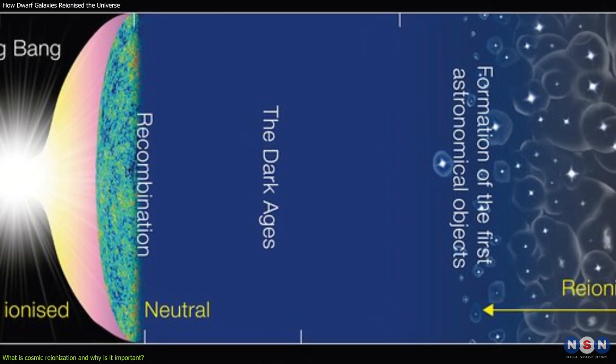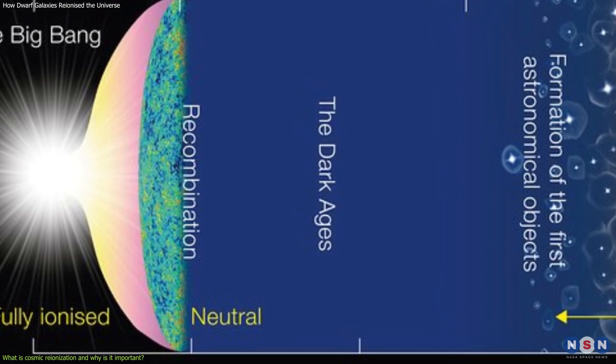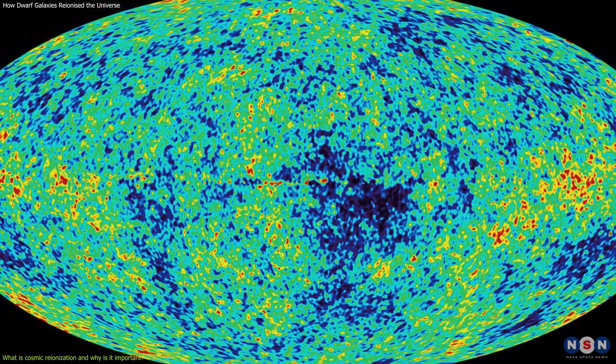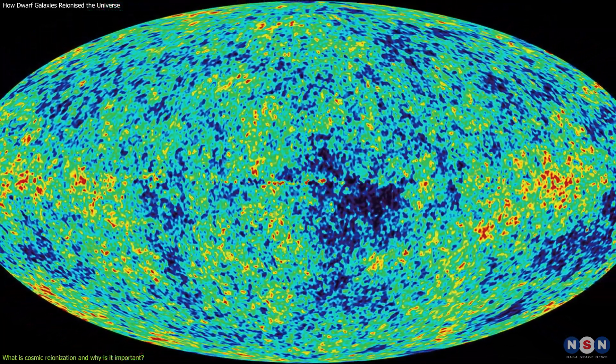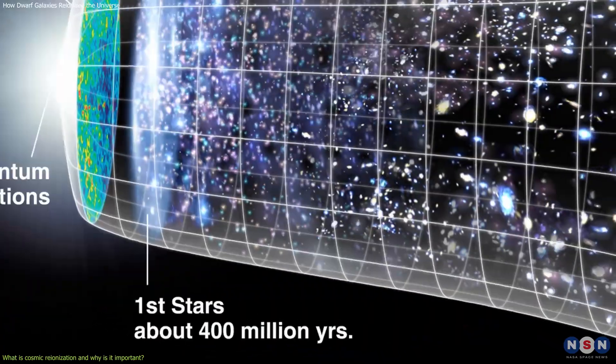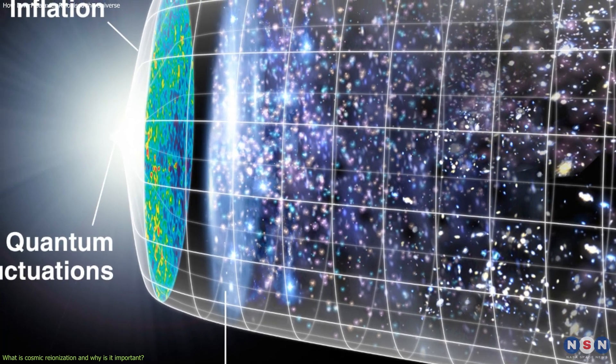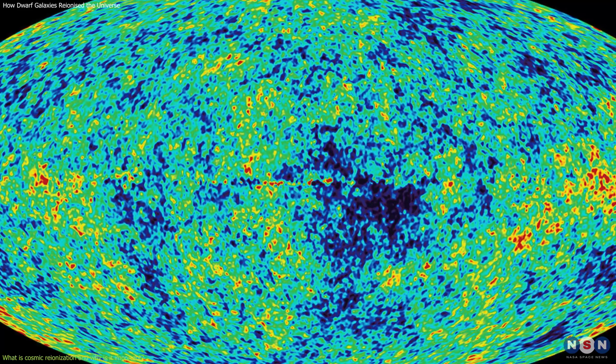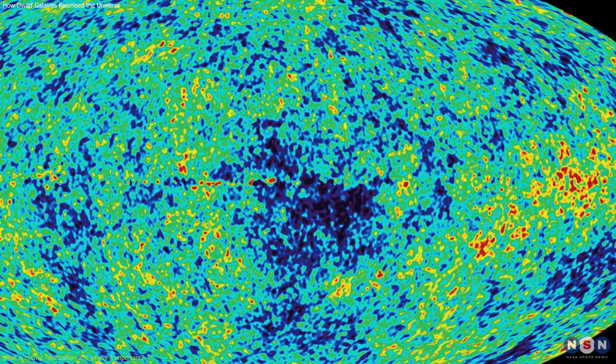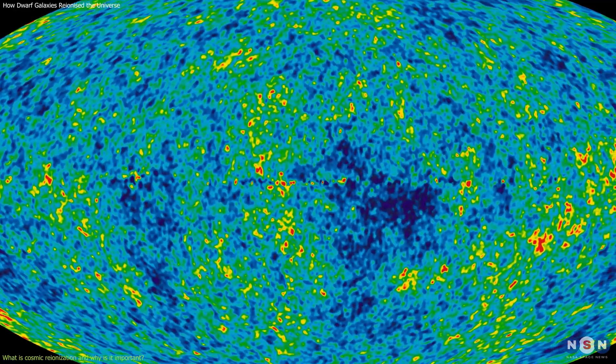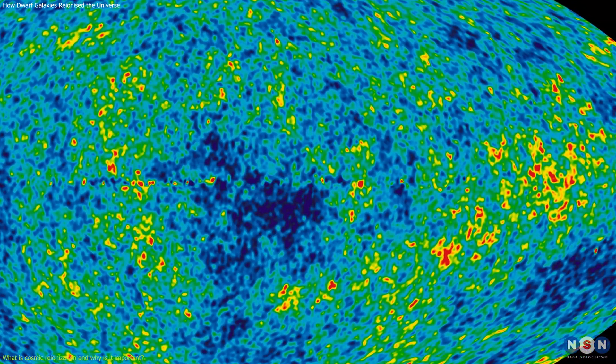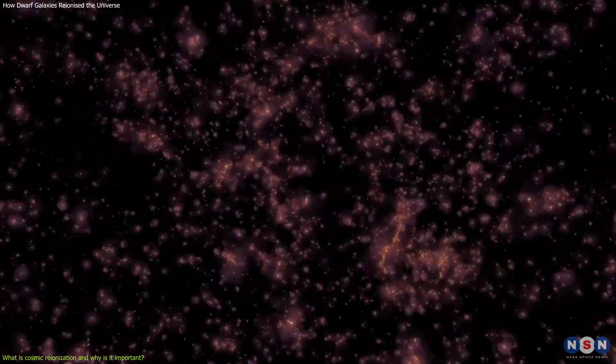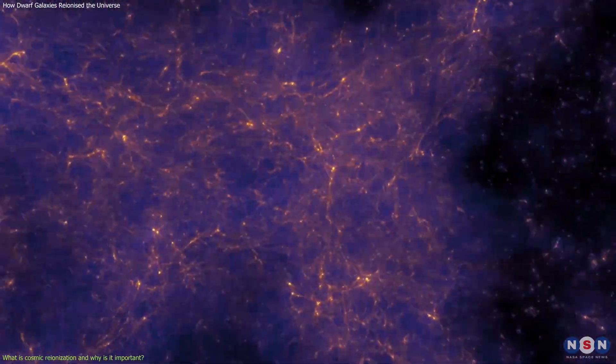But how do we know that reionization happened? And how can we study it? Well, one of the main sources of evidence for reionization is the cosmic microwave background, or CMB, which is the oldest light in the universe, dating back to 380,000 years after the Big Bang. This is a snapshot of the universe when it was still hot and dense, before the formation of any stars or galaxies. By analyzing the tiny variations in the temperature and polarization of the CMB, we can infer some information about the reionization process, such as when it started and ended, and how much of the hydrogen gas was ionized.